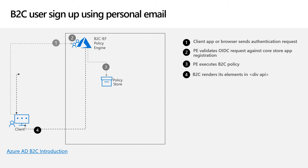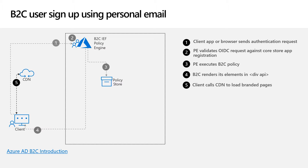B2C renders the necessary elements into the div container with the ID API. To load branded pages, you can target the div container with your custom HTML. The JavaScript on the client browser will pull the custom HTML from your HTML storage and merge it with the HTML rendered to the browser from the policy engine. You have options to store the HTML content in an Azure Blob, CDN, or anywhere that suits your business needs. We recommend using a CDN because it is faster for a better user experience.